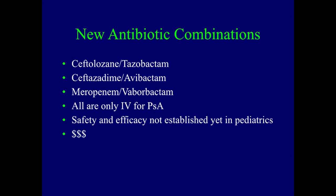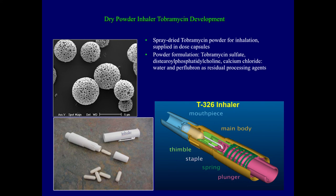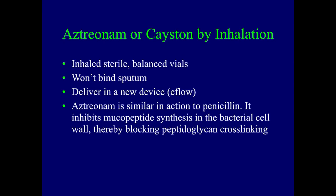Tobramycin had an important development in the last decade — a spray-dried Tobramycin powder for inhalation that comes in capsules. Many of you have probably used the TOBI inhaler. This diagram shows the inhaler and capsules used to speed up inhalation of Tobramycin. Tobramycin isn't a particularly pleasant drug to take, so the TOBI Podhaler is a little easier to use. We also have aztreonam, marketed as Cayston for inhalation. This is an inhaled sterile product that comes in pH-balanced vials and delivers through the eFlow device.